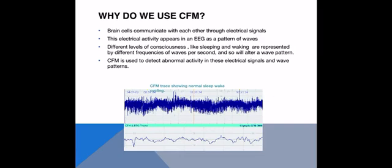A good example of this is sleeping and waking. On the trace shown on the slide, the wave pattern appears narrower in some places and wider in others, and this reflects the sleep-wake cycle, which is normal and something we want to see on our CFM traces.